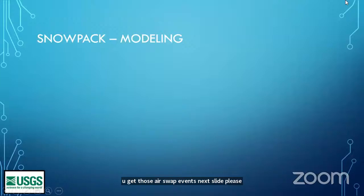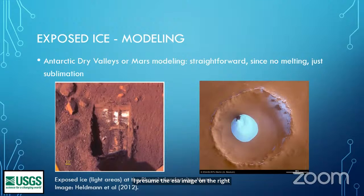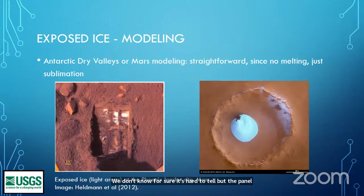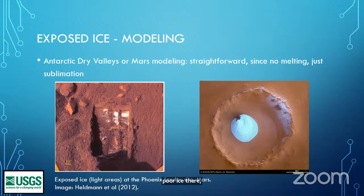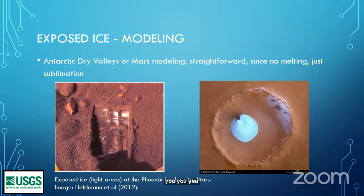Exposed ice — here are two kinds. The ESA image on the right is presumed to be a slab of ice; the panel on the left is obviously from Phoenix, where you have ice that's probably just a little bit of excess pore ice. These are relatively straightforward to model — especially for Mars or the Antarctic dry valleys where you don't have any melting. If you're just calculating sublimation, it's pretty straightforward.